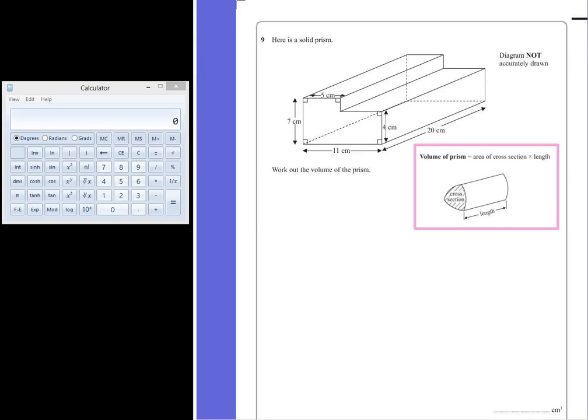Question 9. Here is a solid prism. It's not drawn accurately and we have to work out the volume of the prism.